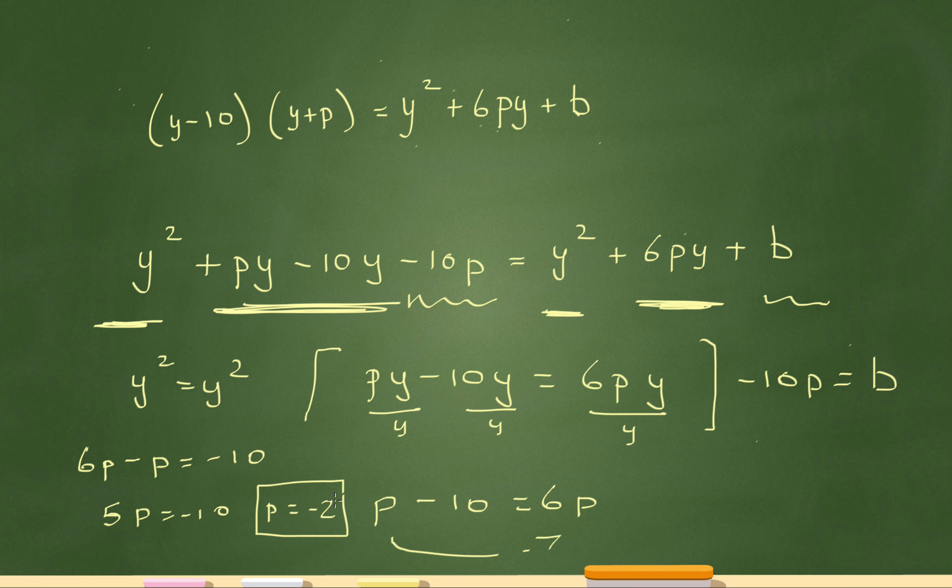And the question's not asking me for p, so you can't put that down. The question's saying what's the value of b. So let's hop over here. Now I know that p is negative 2. So that'll be negative 10 times negative 2, which will be positive 20 equals b. So b has to equal 20.